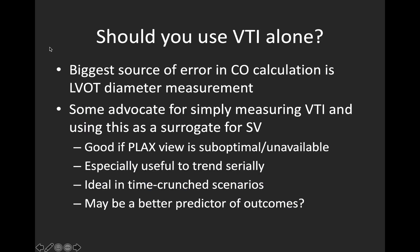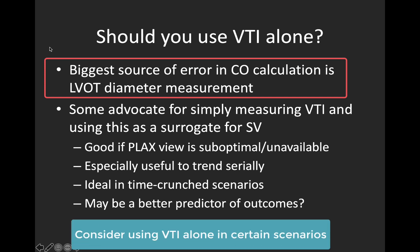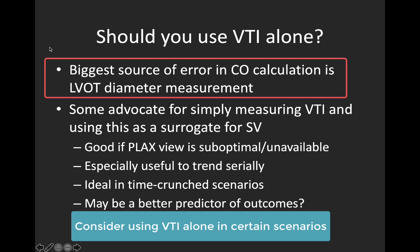It's important to note that the biggest source of error in this whole calculation is the 2D LVOT diameter measurement, and remember that any errors there are magnified because the radius term is squared in our equation. Because of that, some people advocate for skipping this step and using the VTI alone as a surrogate for stroke volume. There are a lot of advantages to this: it removes the biggest source of error, it's great if your parasternal long axis view is unavailable or suboptimal, it's really good for trending values serially in response to therapy since the LVOT diameter won't vary over time, and it's great in time-crunch scenarios such as a resus in the emergency room. It may also be a better predictor of long-term outcomes, based on some interesting recent data.